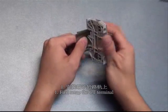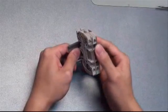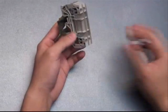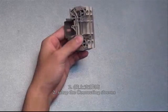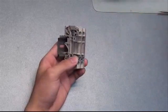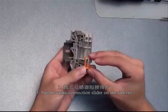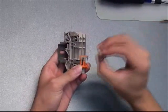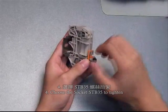Set up the terminals, and then we put the connecting stiff into here. And then we put the cross-connection slider on the connecting stiff. And choose sockets STB35 to tighten the cross-connection slider.